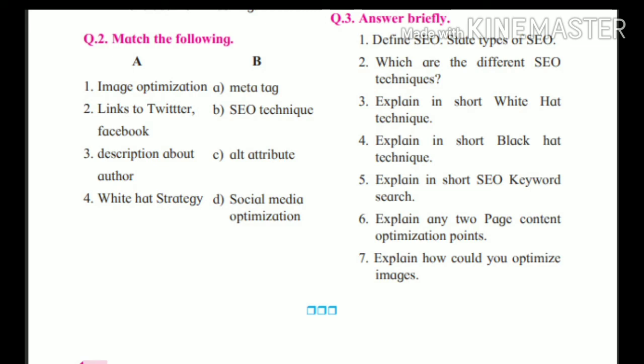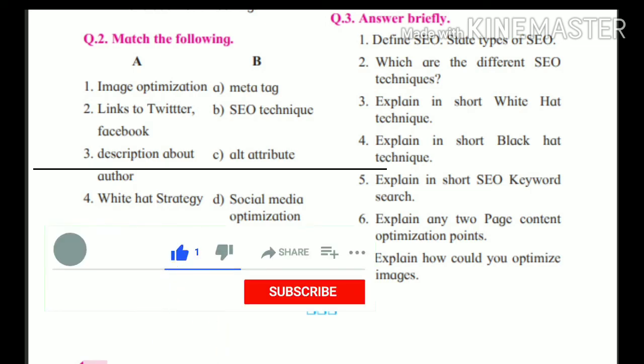Question number 7: explain how you could optimize images. The answer is image tag with ALT attribute. The ALT attribute gives information about the image, so even if the image does not download, it can make the viewers understand image-related information. This is the end of chapter 2.